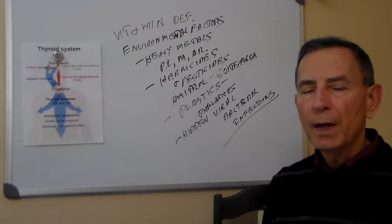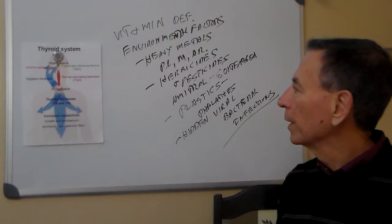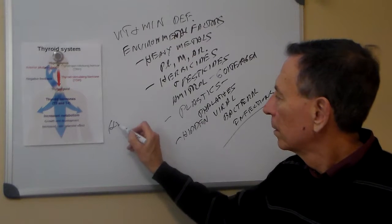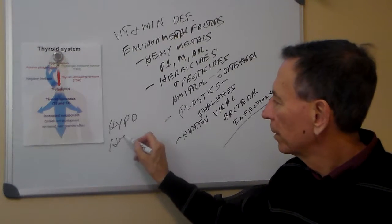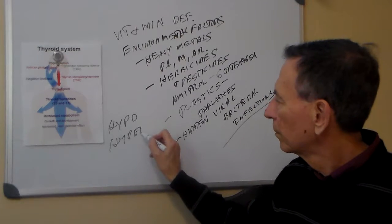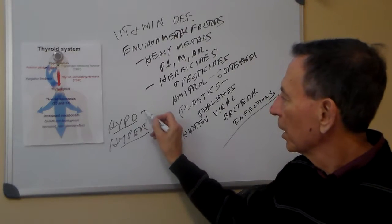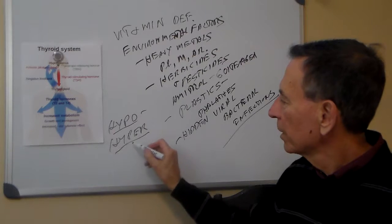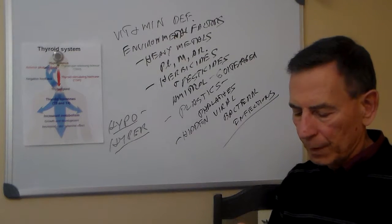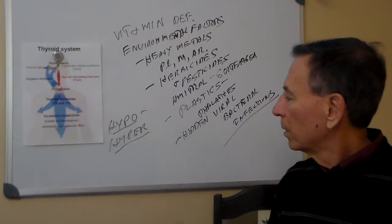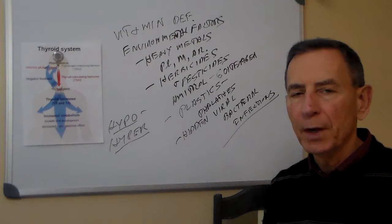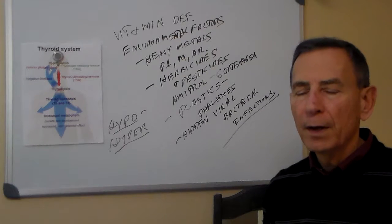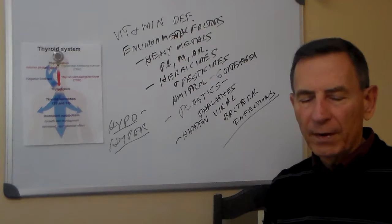Now the opposite of the hypothyroid is the hyperthyroid. So this is low and this is high or too much. So when we produce too many thyroid hormones we have what's called hyperthyroidism. It's much less prevalent than hypothyroid. In fact, hypothyroid is about 16% of the population whereas hyperthyroid is only about 1%.